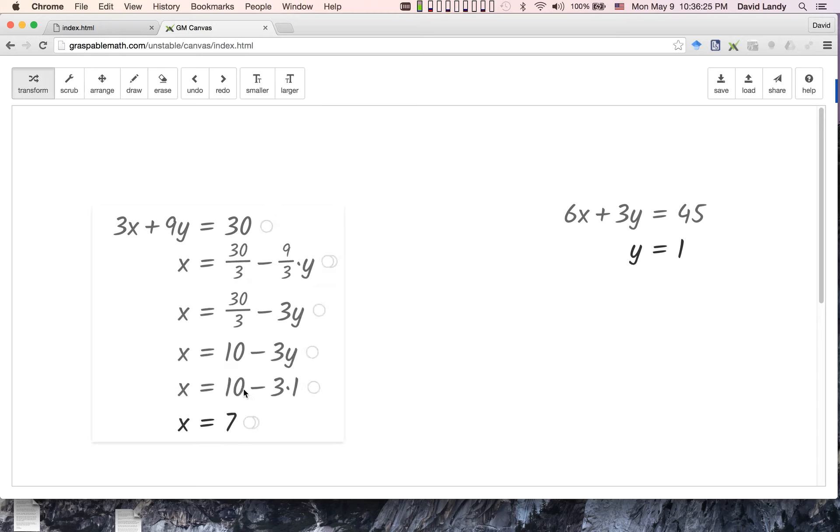If we want to see where certain things came from, like, where did that 10 come from? There's no 10 in the original problem. Where is that 10? I could make some guesses, or I could go through and check. Or in our case, I can just click on the 10 and confirm that, yes, indeed, that 10 is a direct descendant of that 30 over 3. So there it is. And 30 over 3 is 10. That's why we got that 10 there.